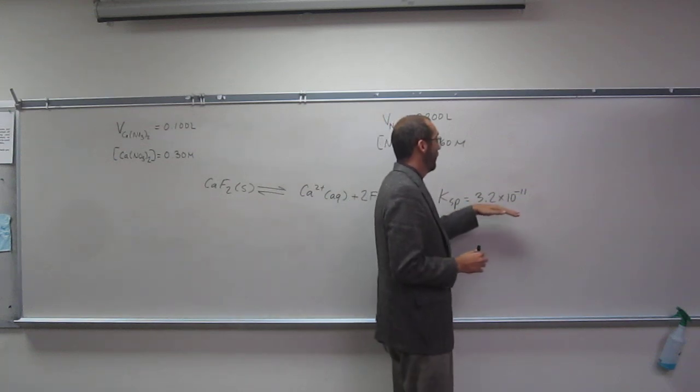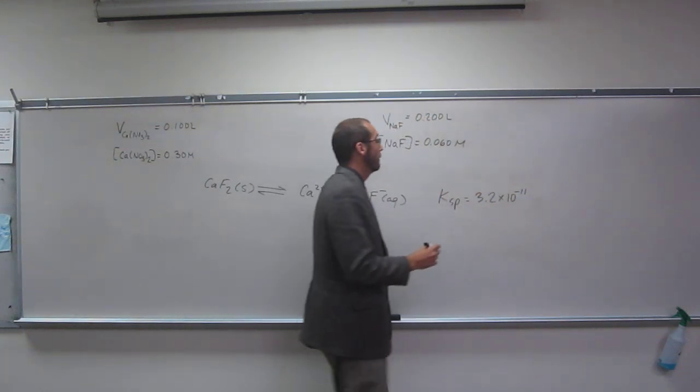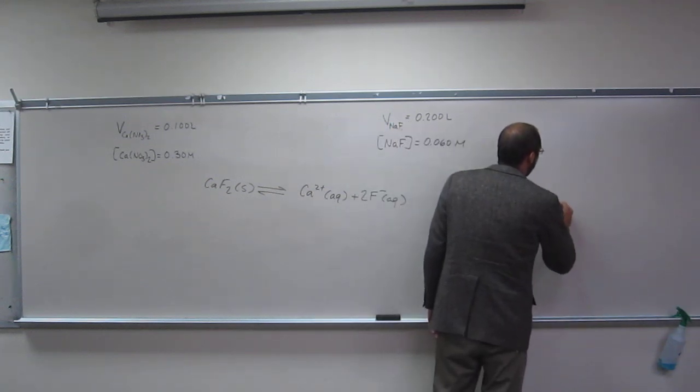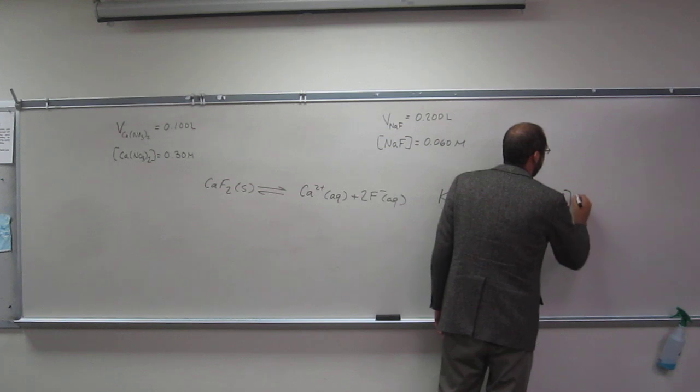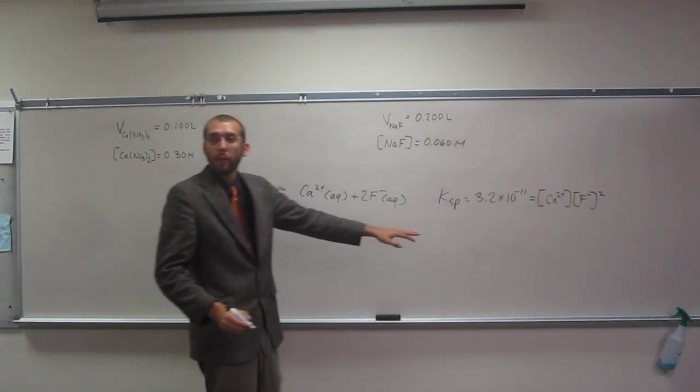Remember, that's what it takes to have a precipitate being formed. This expression you should all be able to do by now: Ca2+ times F- squared. Is everybody okay with that?